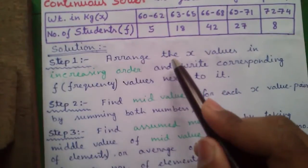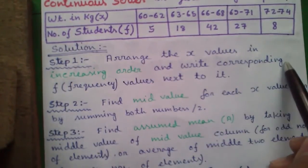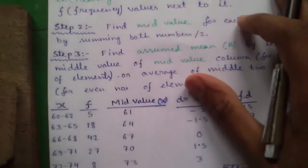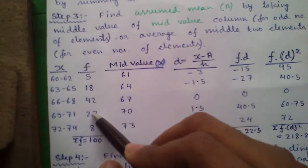Step 1: Arrange the x values in increasing order and write the corresponding f or frequency values next to it. x values are arranged in increasing order and corresponding f values are written to it.